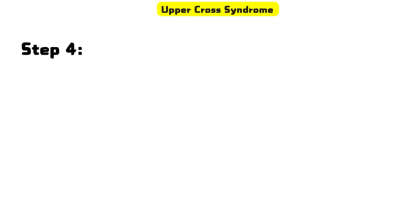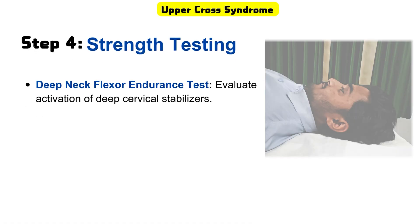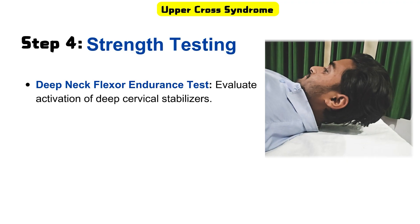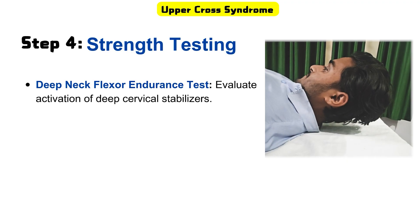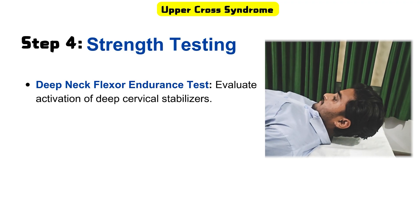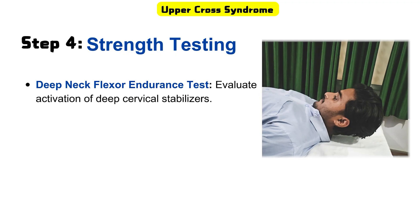Step four is strength testing. For evaluating the strength of the deep neck flexors, we perform a simple endurance test in which the patient is asked to tuck the chin and perform neck flexion, then hold it for a while. Inability to hold the neck position signifies a positive test for upper crossed syndrome.